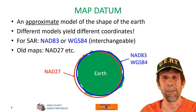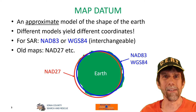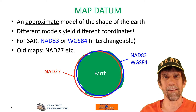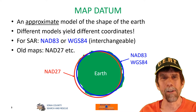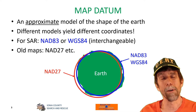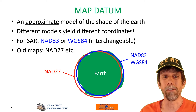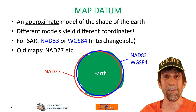A map datum is an approximation of the shape of the Earth — a mathematical model that approximates the Earth's shape. The Earth is this big, lumpy, bumpy, kind of round thing, but it's not perfectly round. As shown in the illustration, greatly exaggerated, it's not a perfect sphere by any means and it's not even a perfect squashed sphere. So we use a mathematical model to approximate that shape in order to develop coordinate systems like the US National Grid. Different mathematical models have been developed over time and different models will yield different coordinates for a given point.